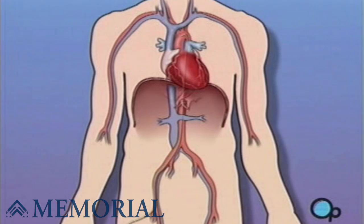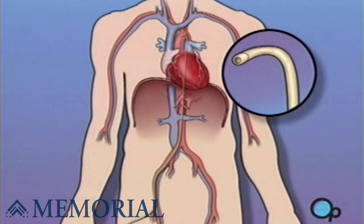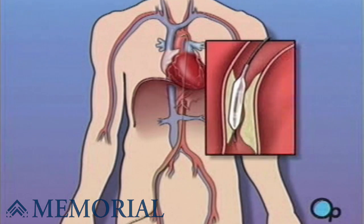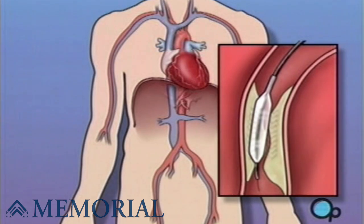During a balloon angioplasty, a heart specialist will insert a thin tube into the artery in your arm or leg and gently guide it towards the problem area in your heart. Once the tube is in place, a small balloon is briefly inflated in order to widen the narrowed artery. A short length of mesh tubing called a stent is then inserted into the newly widened artery.